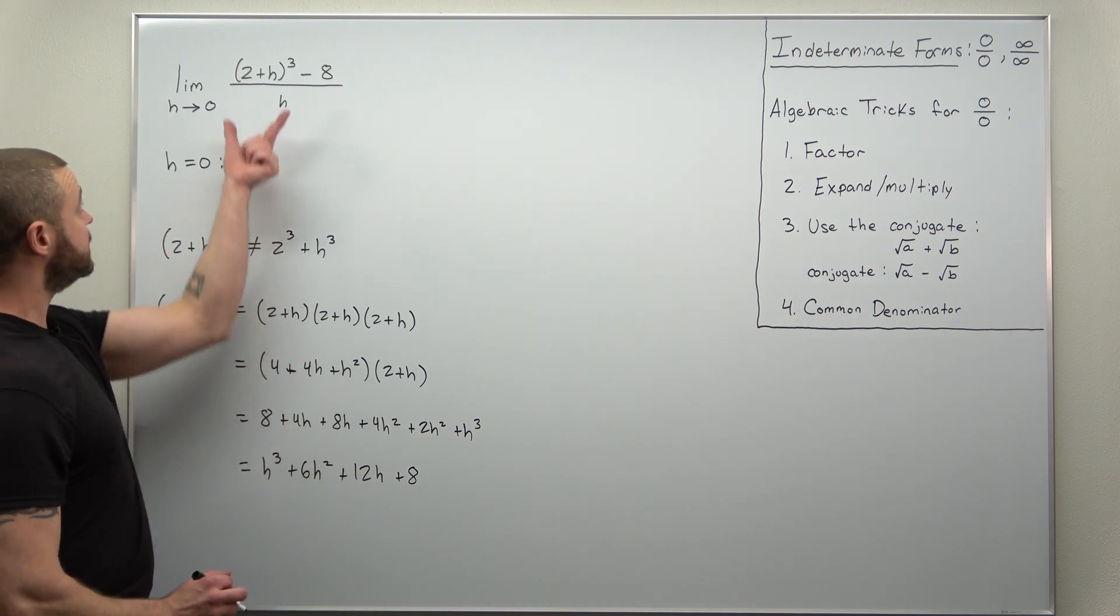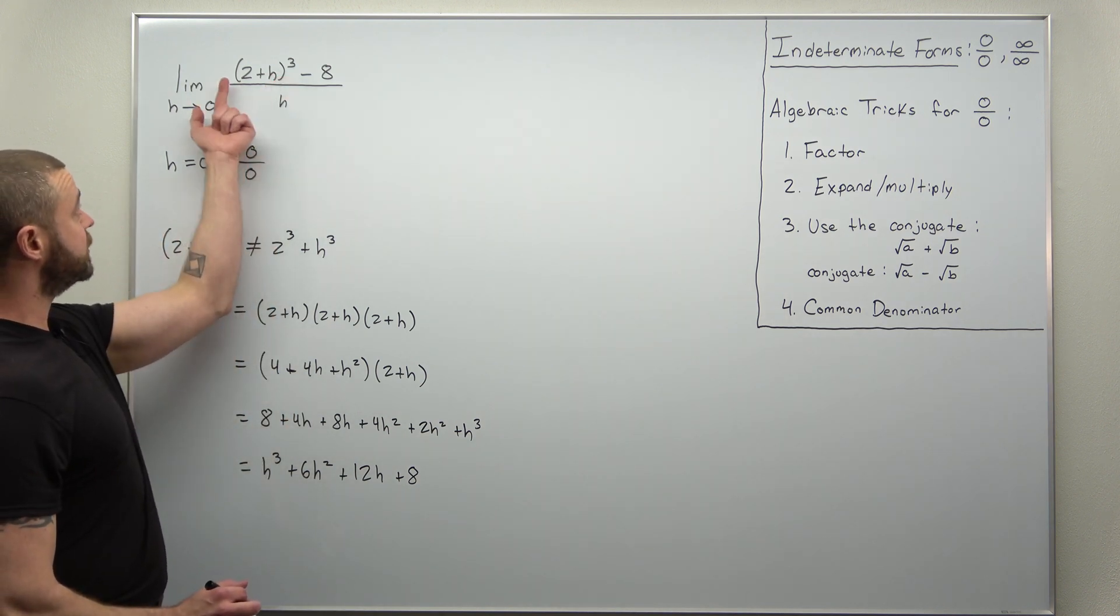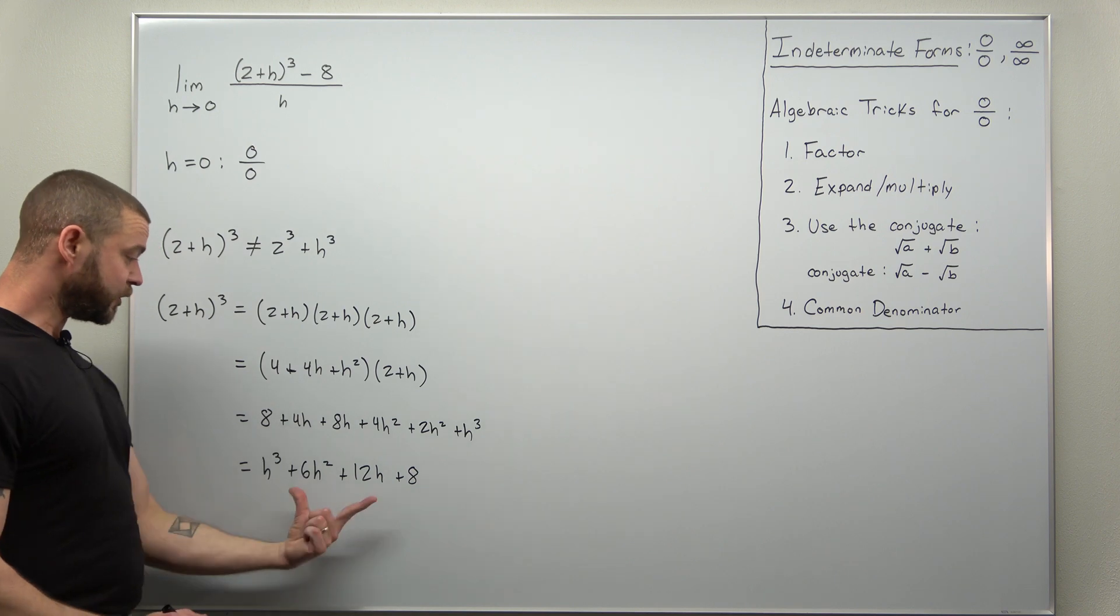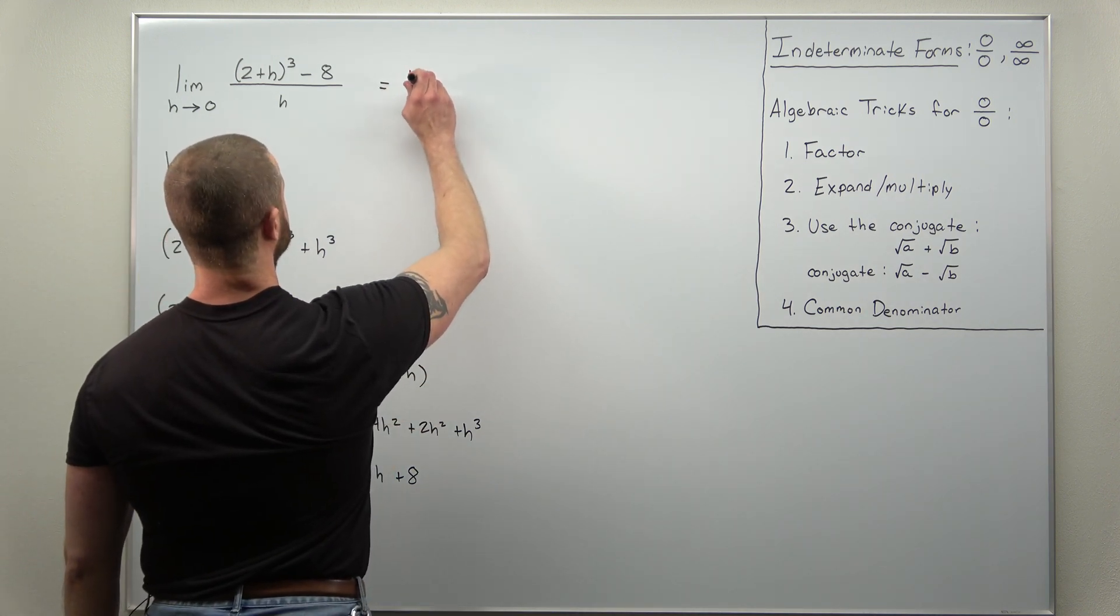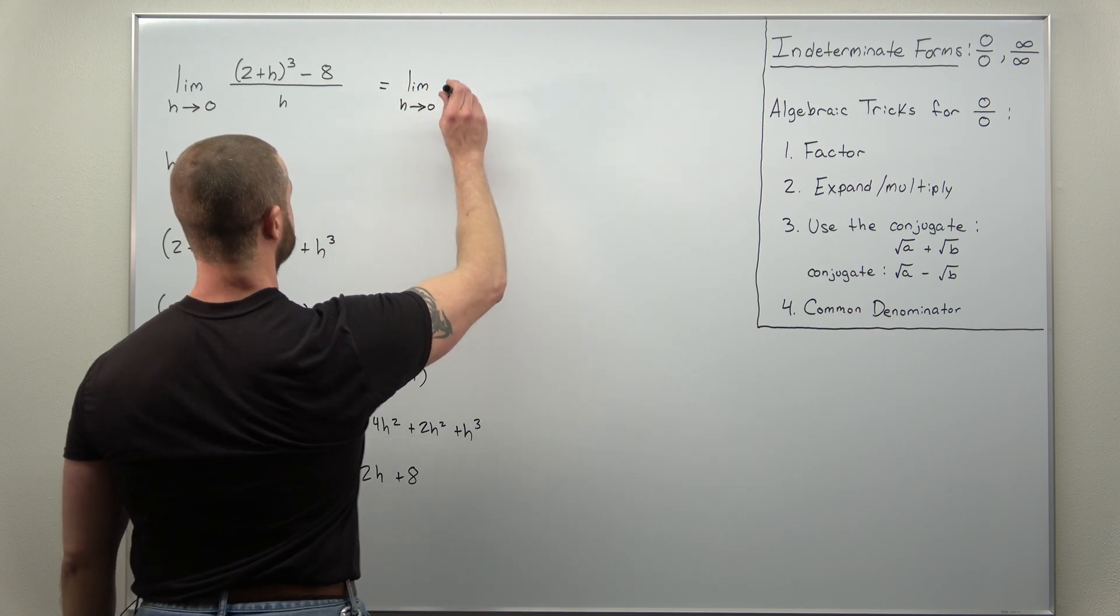Now we just expanded the first term in the numerator, (2 + h)³, and let's go ahead and plug all that in. So we're evaluating the limit as h approaches zero.